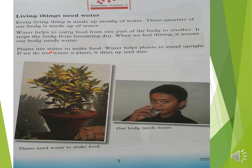Plants use water to make food. Water helps plants to stand upright and keeps the plants alive. If we do not water a plant, it dries up and dies. Plants need water to make their food, and the body needs water as well.